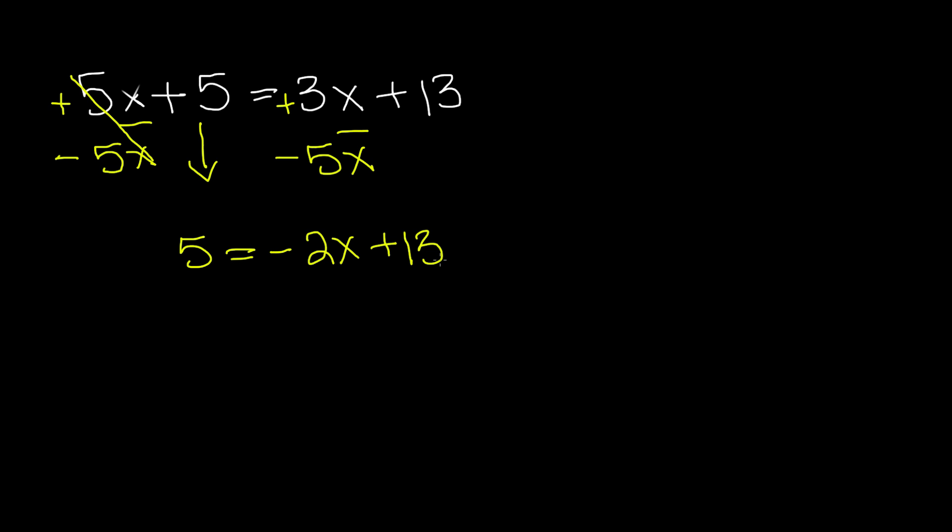Now we have another term which is positive 13 and we're going to do inverse operations on like terms. So we do negative 13 on both sides on the like terms, so we have positive 13 and negative 13 which cancel each other out so we're left with negative 2x, and positive 5 and negative 13 give us negative 8.